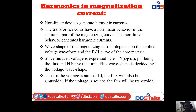In the previous class I discussed the effects of the non-linear BH curve of the magnetizing material. The wave shape of the magnetizing current depends on the applied voltage waveform and the BH curve of the core material. Since induced voltage is expressed by E = N·dΦ/dt, where Φ is the flux and N is the number of turns, the flux wave shape is decided by the voltage wave shape.